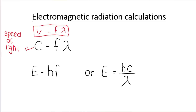The speed of light is a constant, which means it always stays the same. The speed of light has a value of 3 times 10 to the power of 8 meters per second, and it will always have that exact same value. What's very important to realize is that all electromagnetic radiation — all electromagnetic waves — so light, UV, infrared, x-rays, gamma rays, all of those waves travel at the same speed, which is the speed of light.